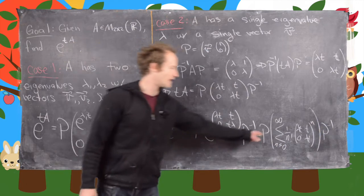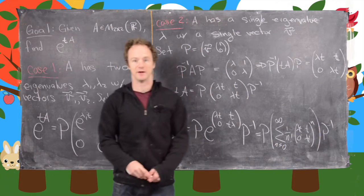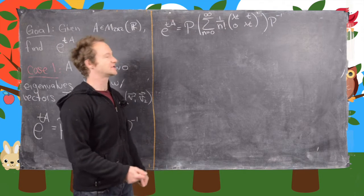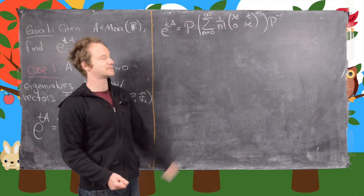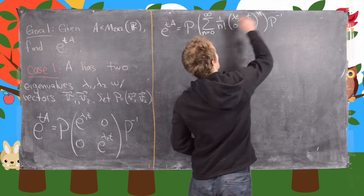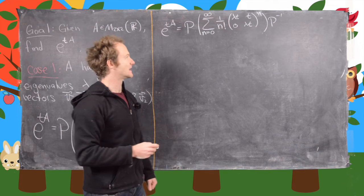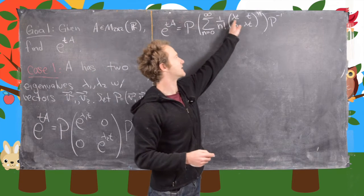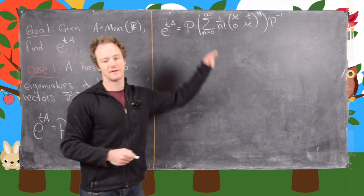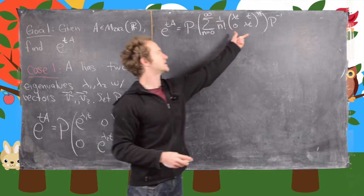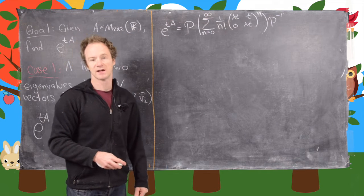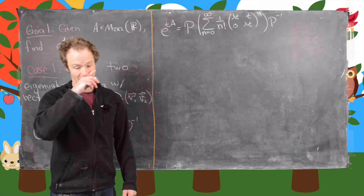Let's clean up the board and calculate what this matrix exponential ends up being. We left off where E to the TA is P times this sum of powers of our nearly-diagonal matrix — lambda T, T, 0, lambda T — times 1 over N factorial, times P inverse. Our goal is to calculate an arbitrary power of the matrix (lambda T, T, 0, lambda T). Let's go through a couple of examples, then guess the solution — I'll let you think about how to prove it by induction.